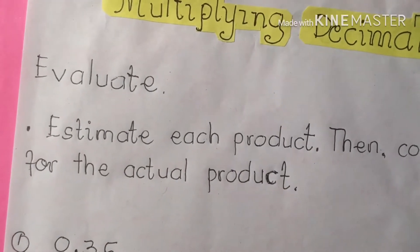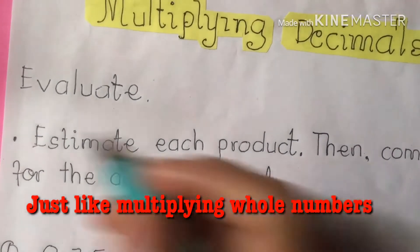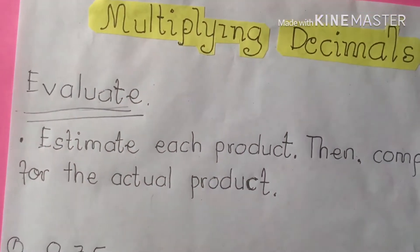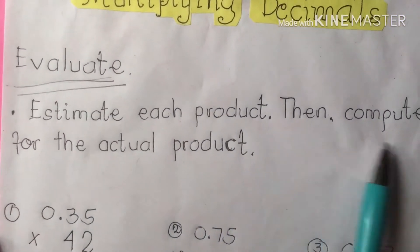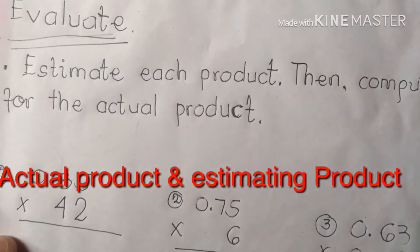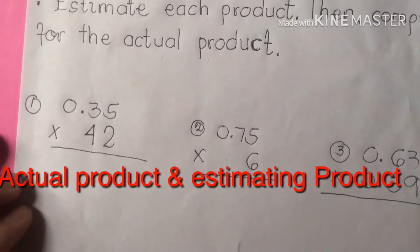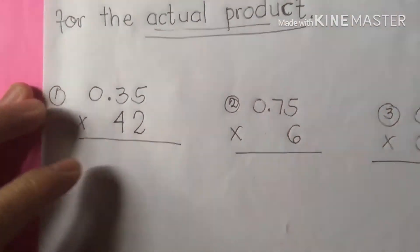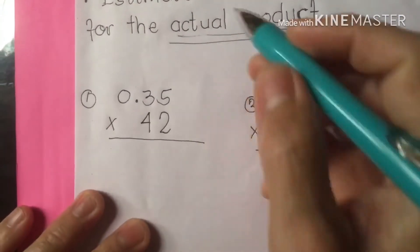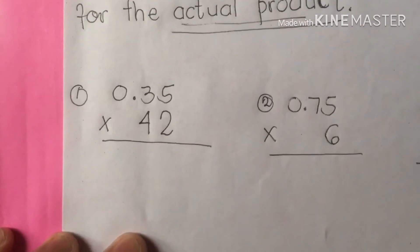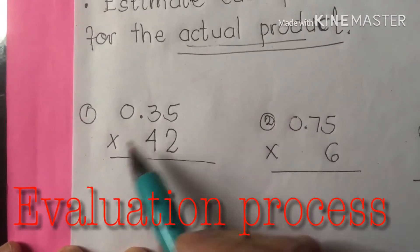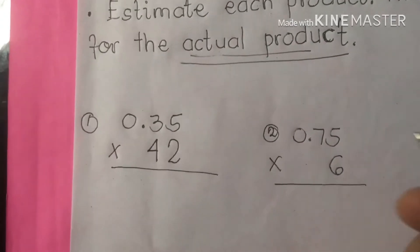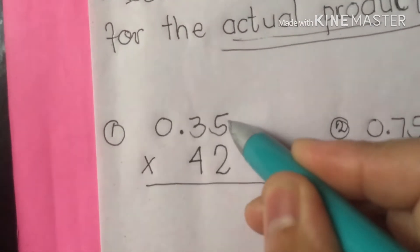We're going to proceed to our evaluation. We are going to evaluate the following given problems. Estimate the product, then compute for the actual product. So we are going to solve first for the actual product. Let's do this. For number 1, the given is 0.35 times 42. So we're going to solve first the actual product by multiplying this.